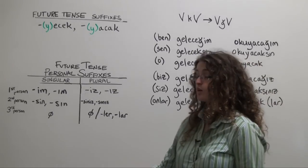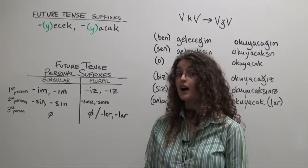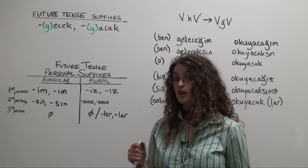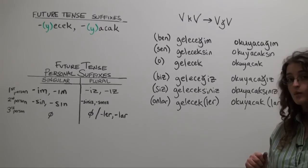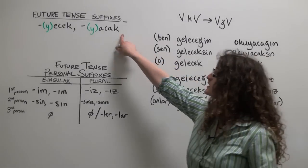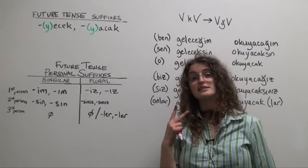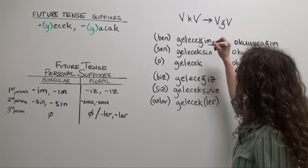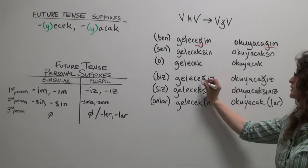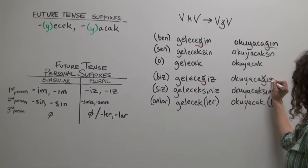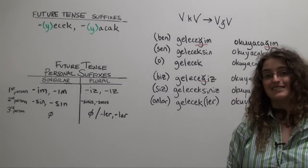Let me just highlight where you're going to see consonant alternation occurring in the future tense. Alright, it's anywhere where that final k in the future tense suffix is sandwiched between two vowels. So in the first person singular and in the first person plural. And that's how you form the future tense in Turkish.